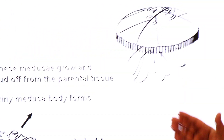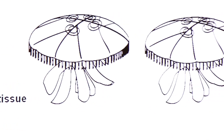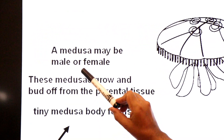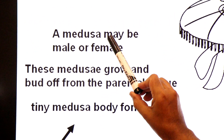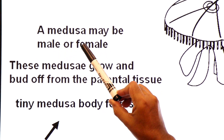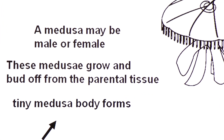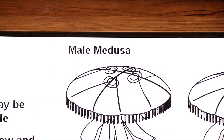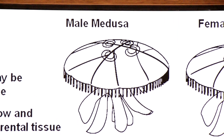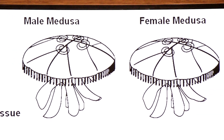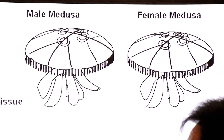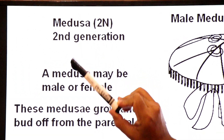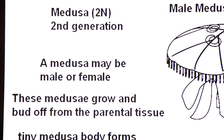One tiny medusa develops into a male medusa and the other develops into a female medusa. Remember, a medusa may be male or female. This second generation is also diploid — both generations are diploid.